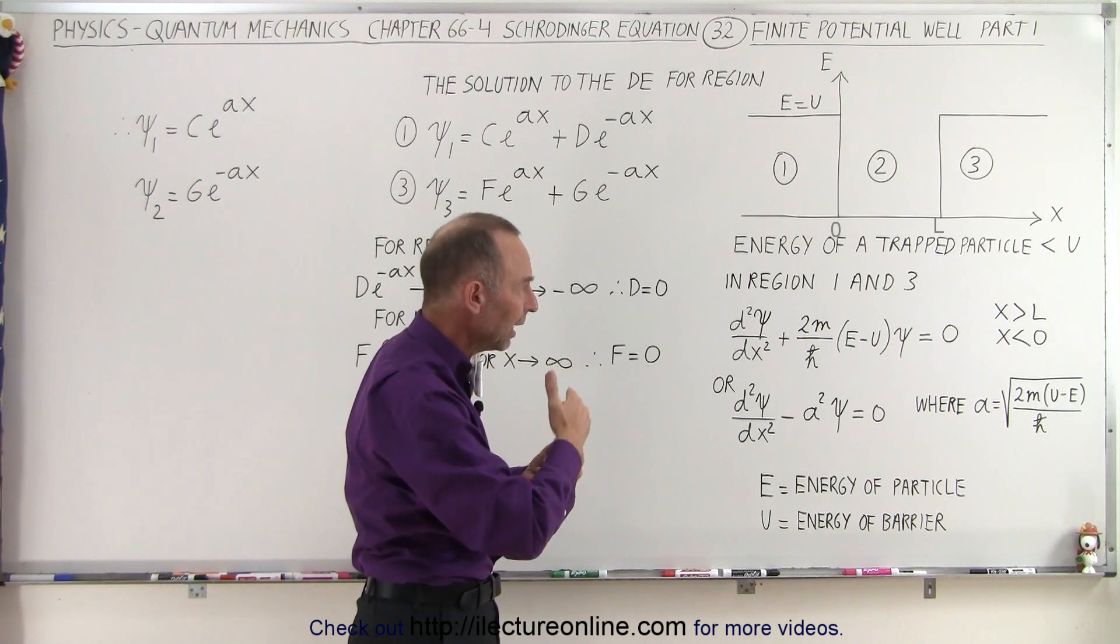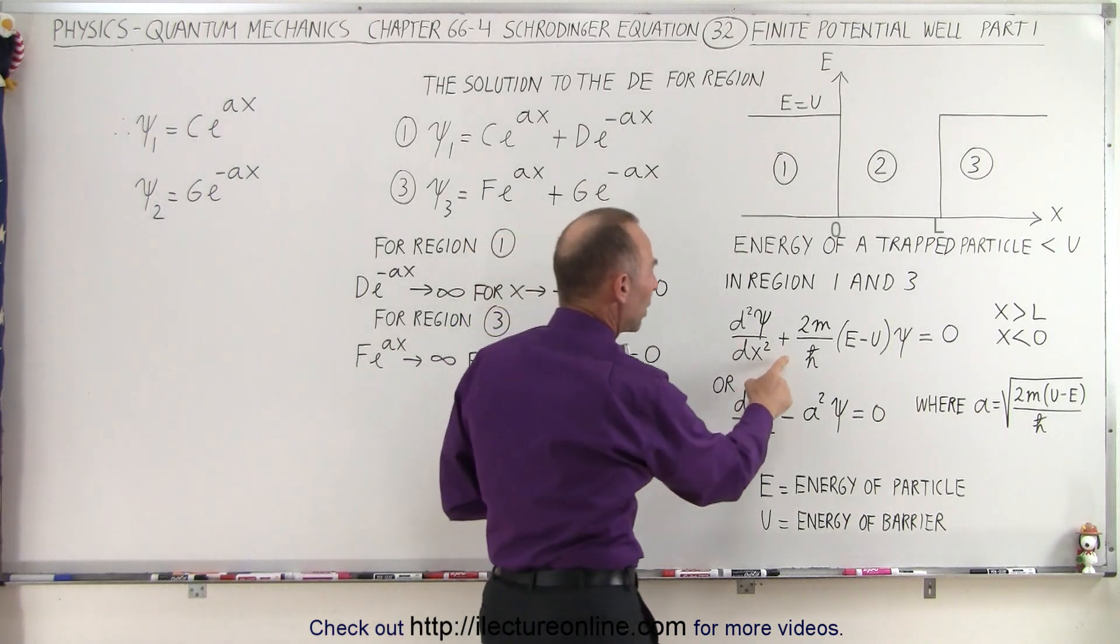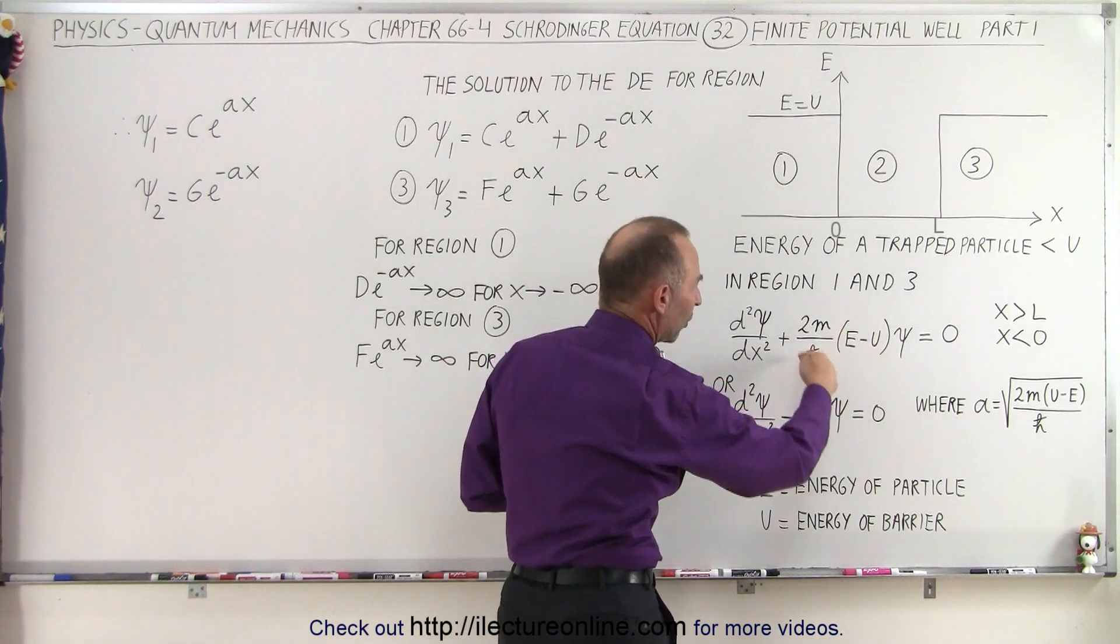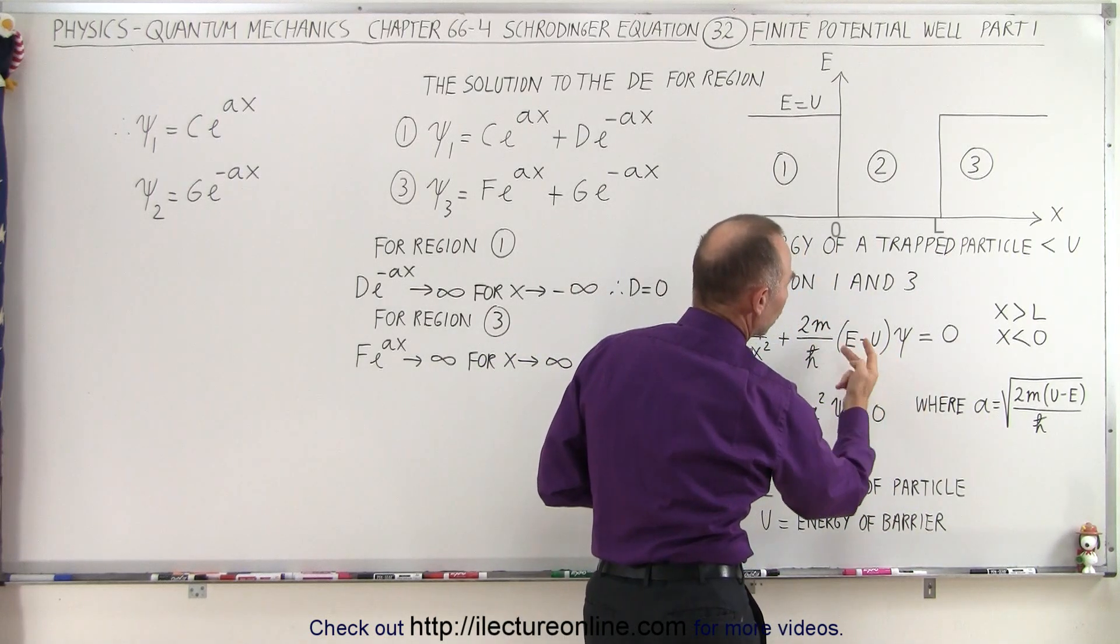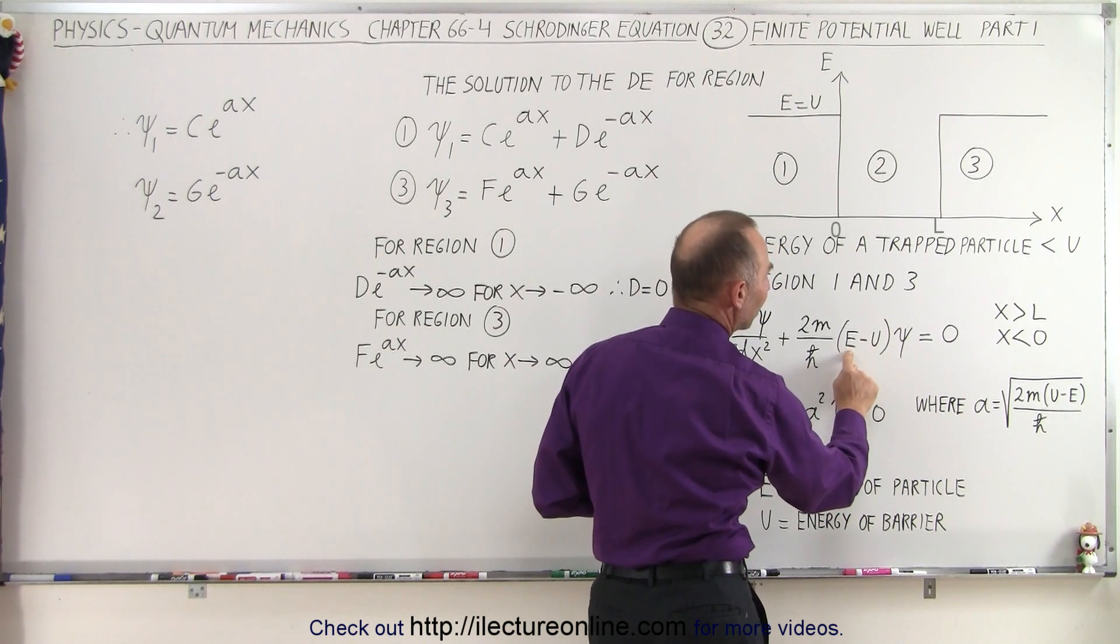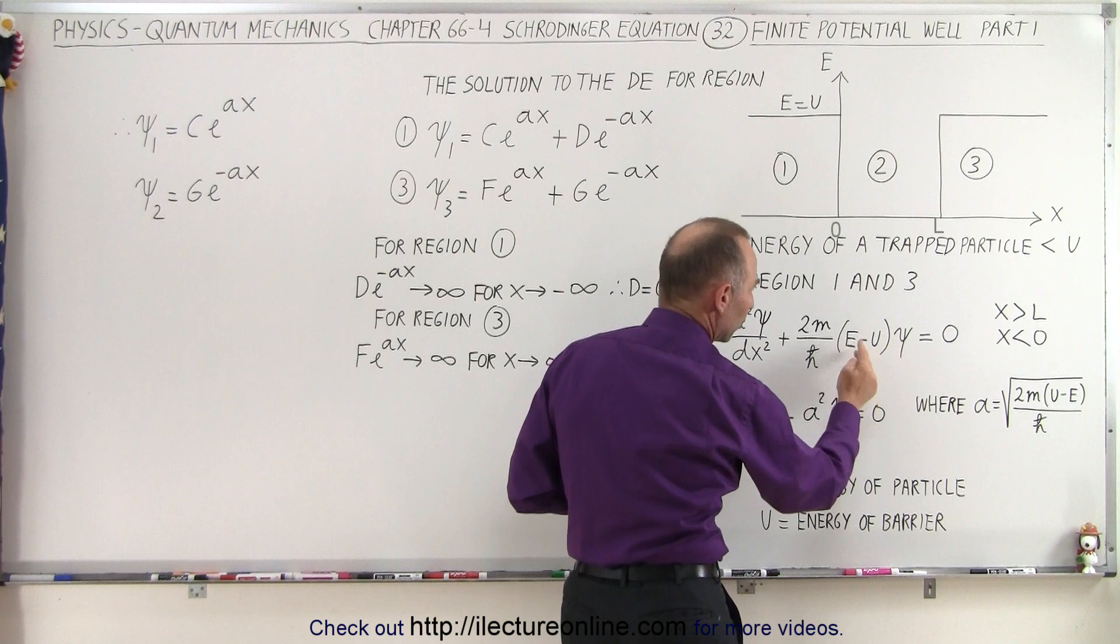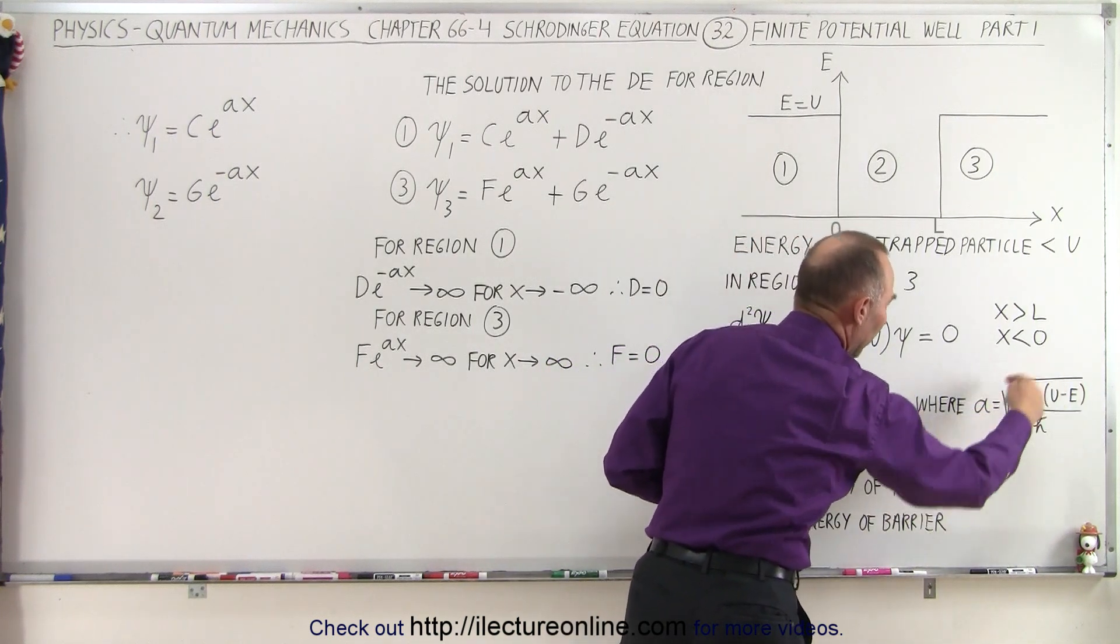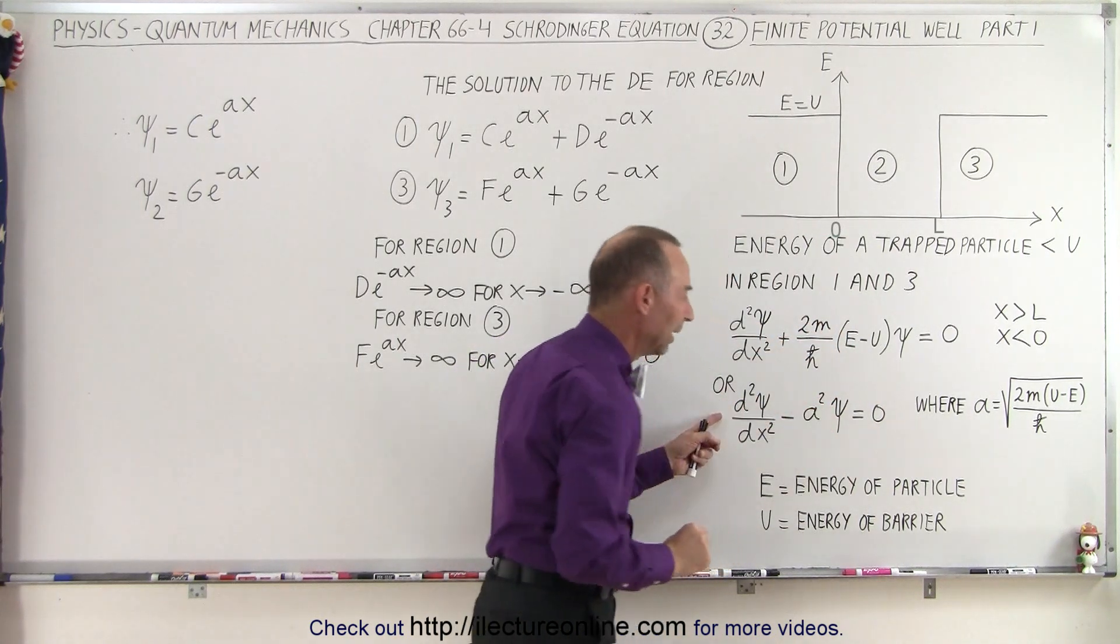So we're going to explore region 1 and region 3. For that, we go back to Schrodinger's equation, which can be written like this, and then if we replace this quantity right here, as here, so what we do here is we're going to switch u and e, of course, u being of higher value than e, but we're going to put a negative in front of it because we switch these around, then we can say that if a is equal to this quantity right here, the Schrodinger equation can be written in a more simplified form like this.